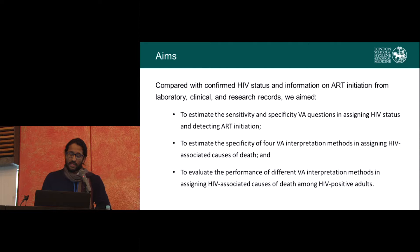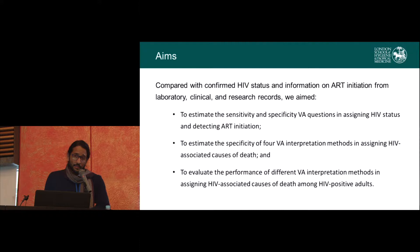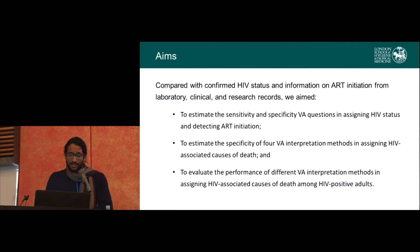With that in mind, these are the aims we set out to address. Compared with confirmed HIV status and ART status among a group of HIV-positive and HIV-negative adults, we aimed to estimate the sensitivity and specificity of VA questions in assigning HIV status and detecting ART initiation. We also tested four different VA interpretation methods and assessed their specificity in assigning HIV-associated causes of death. And since we didn't have a reference standard cause of death for all individuals, we attempted a proxy method to estimate the sensitivity of some of these methods.